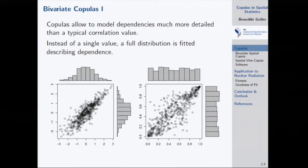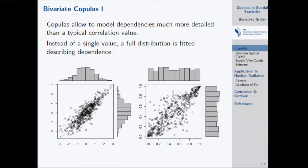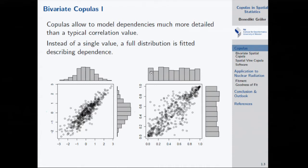Let's start with the simple case of two dimensions — bivariate copulas. The scatter plot on the left is a typical scatter plot with marginal distributions of variable X and variable Y. In this case both marginal distributions are standard normal. The theory of copulas says you can take the margins away: applying the cumulative distribution function gives you uniformly distributed variables on the unit interval.